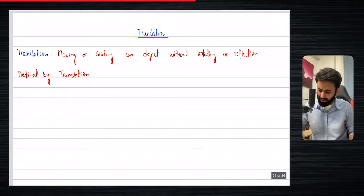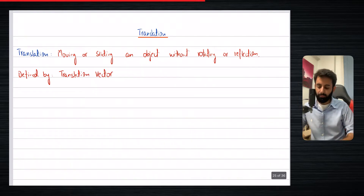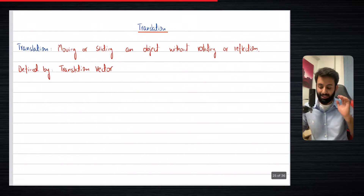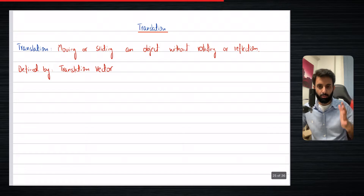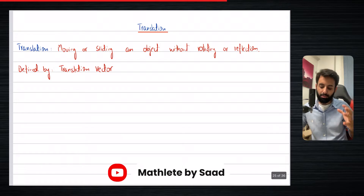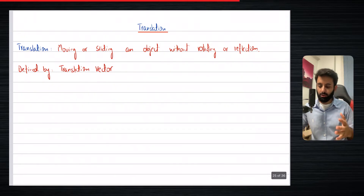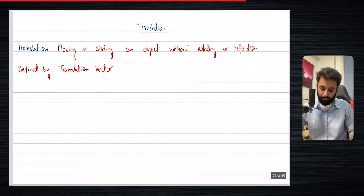You can call it the translation matrix or the translation vector. The translation vector is the vector that decides how much the object is going to move, or how much the object is going to slide around.